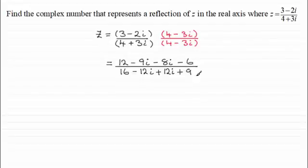Now we just simplify top and bottom by grouping together the real and imaginary parts. And you should end up with 12 minus 6 is the 6. And minus 9i minus 8i is minus 17i. And then in the denominator, you've just got 16 plus 9, which is the 25.